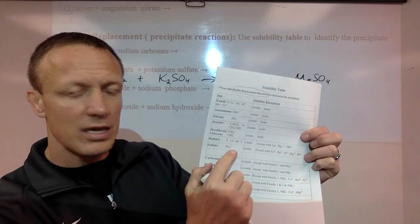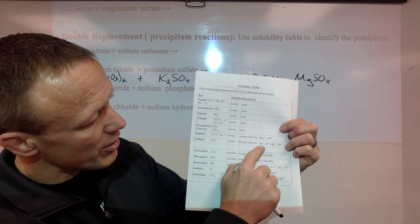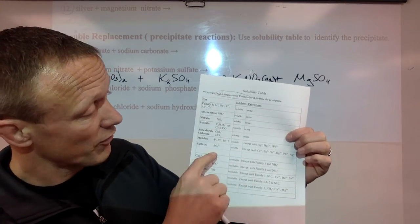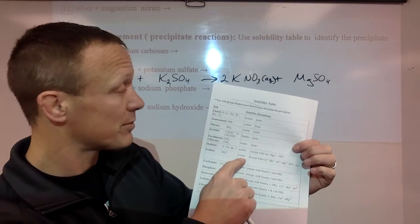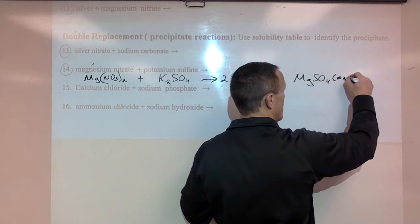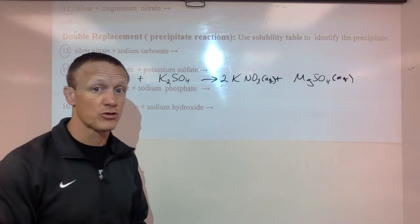Sulfates are soluble unless you have calcium sulfate, barium sulfate, strontium sulfate, mercury sulfate, lead sulfate, or silver sulfate. Well, we don't have any of those. So sulfates are soluble. Magnesium sulfate is soluble. It will dissolve. So both of those are aqueous. There's no precipitate.